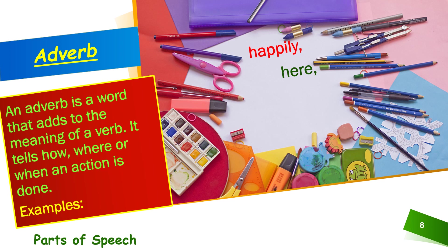Here — come here, come there — so 'here' is an adverb. Tomorrow — I will go to Delhi tomorrow. Go when? Tomorrow. So 'tomorrow' is telling us more about the verb 'go' — it is telling us when this action will take place. So 'tomorrow' is an adverb. Similarly, you have many more adverbs — for example: fast, as in 'I run fast'; now; then; etc.